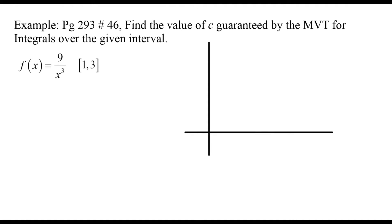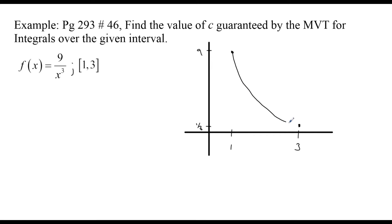Let's talk about a couple of examples. This one says: find the value of c guaranteed by the mean value theorem for integrals over the given interval. Before we talk about that, let's look at the graph of this function. If I plug in 1 and 3 as my closed interval: when I plug in 1, 1³ is 1, so 9/1 is 9. When I plug in 3, 3³ is 27, so 9/27 is 1/3 — way down here.